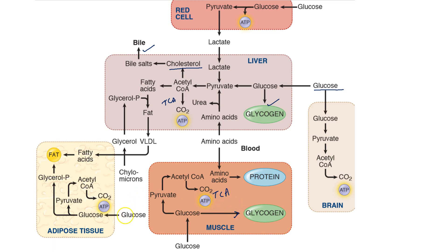In the adipose tissue, glucose helps in synthesis of ATP via a similar pathway and it also helps in formation of glycerol phosphate, which takes part in synthesis of fat. That is why when we eat foods like rice which contain a high amount of starch, that leads to synthesis of fat via this pathway where glucose enters the adipose tissue to form glycerol phosphate, and glycerol phosphate and fatty acids together form fat.